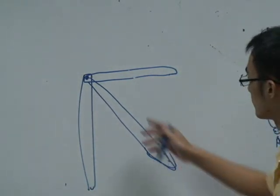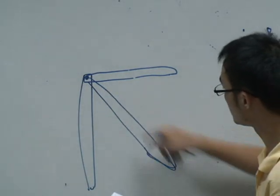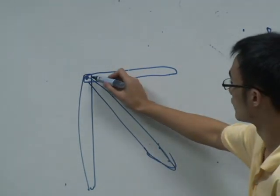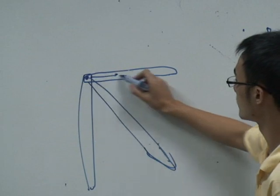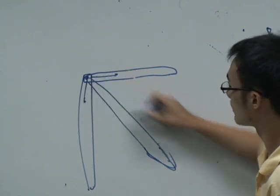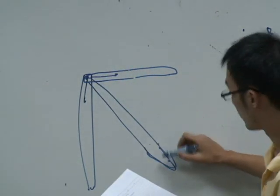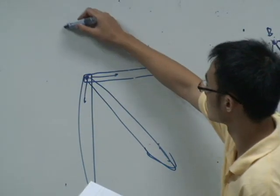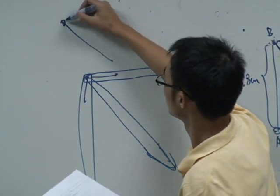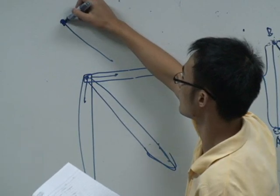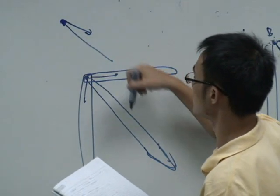Will be the resultant force of this force and this force. So that's the easier way for your consideration. For example, here, for bar BD, actually you will have force from this member and this member to bar BD.